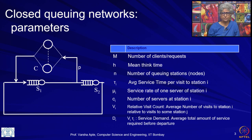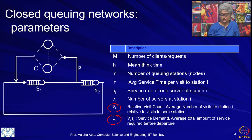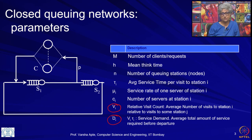Just to remind you, these are the parameters again — this is just for your reference. I will just remind everybody of V_i, which is the relative visit count. Please go back and refer to the previous lecture to recall what a relative visit count is. We have the service demand as usual; for both open and closed queuing networks it is defined in the same way, and the rest of the parameters are as before.